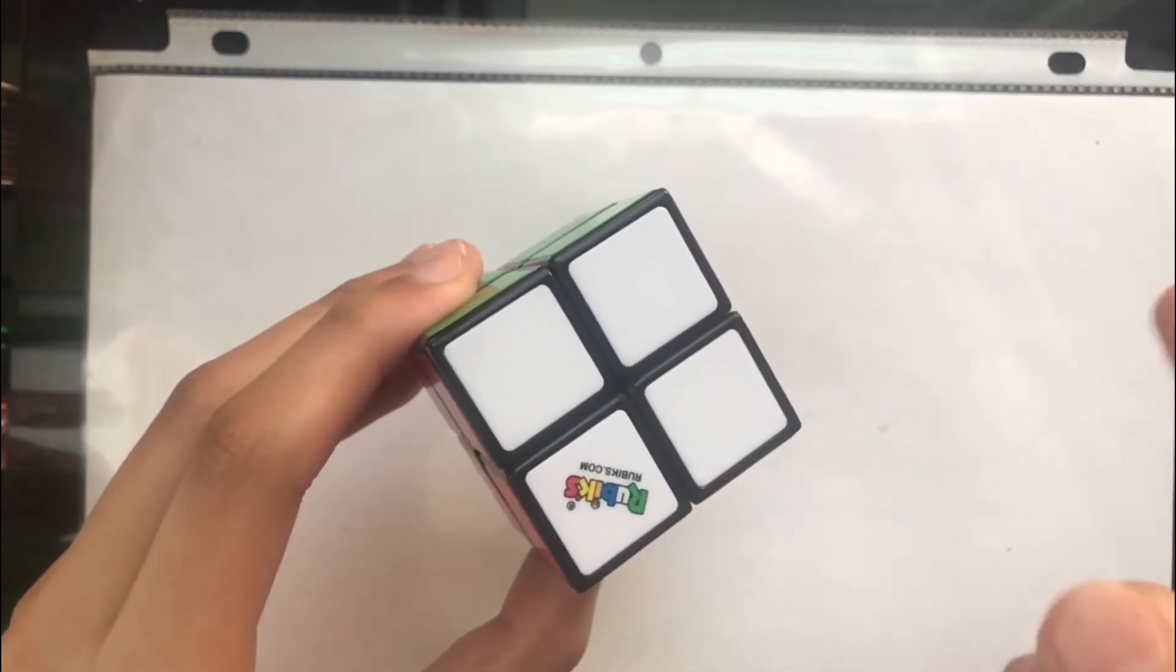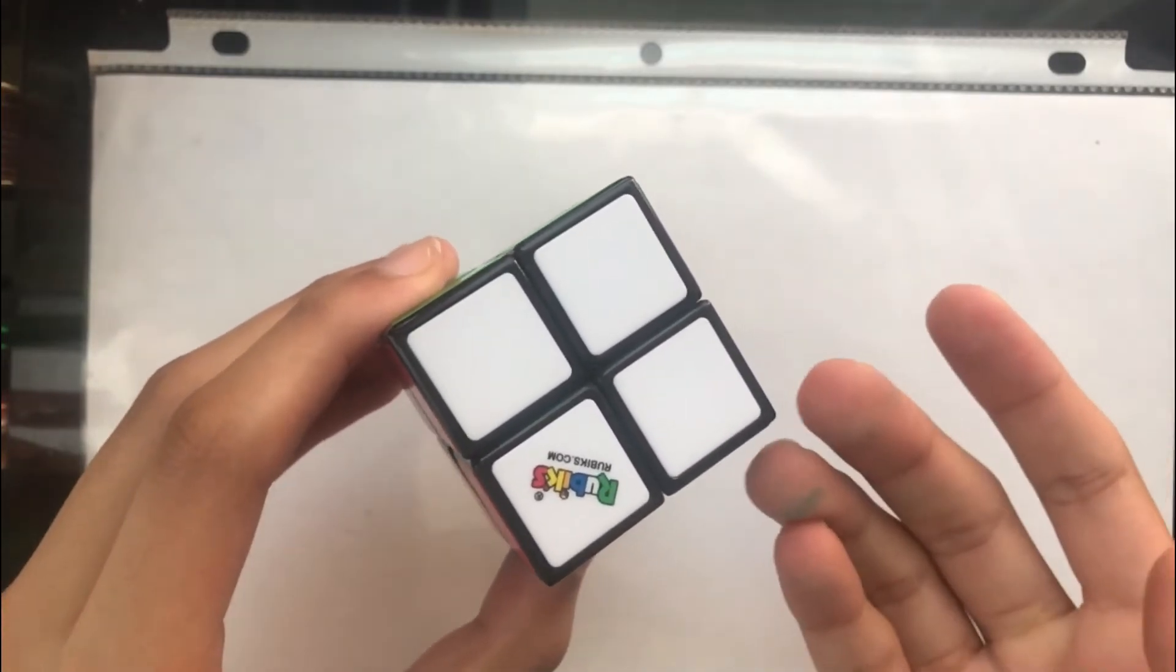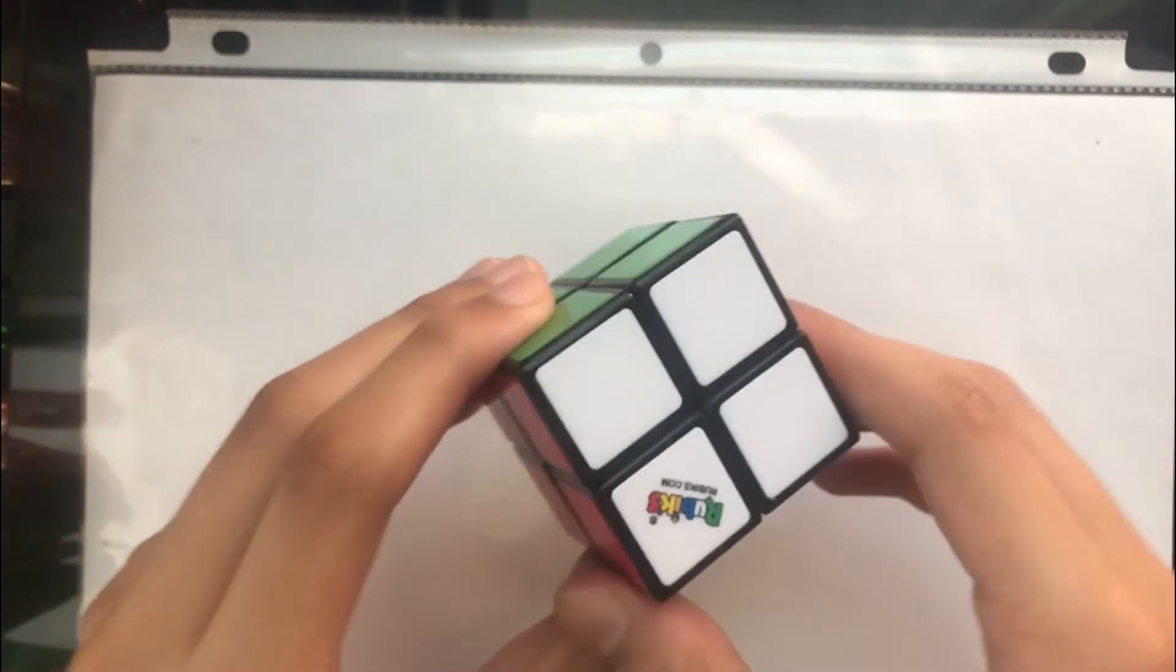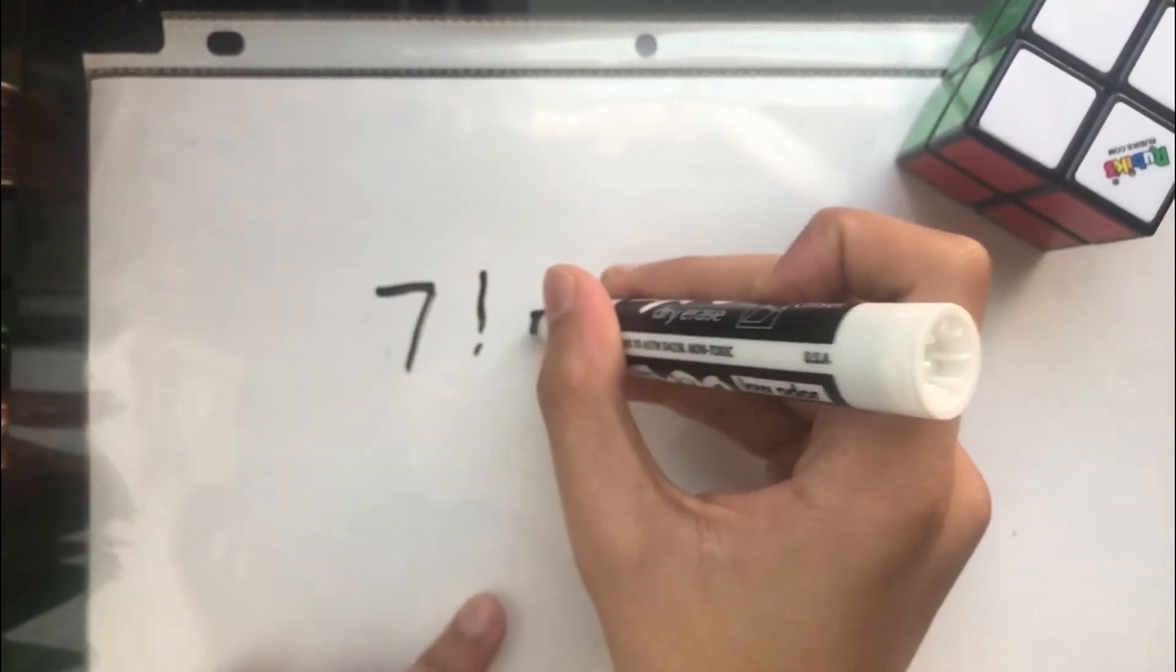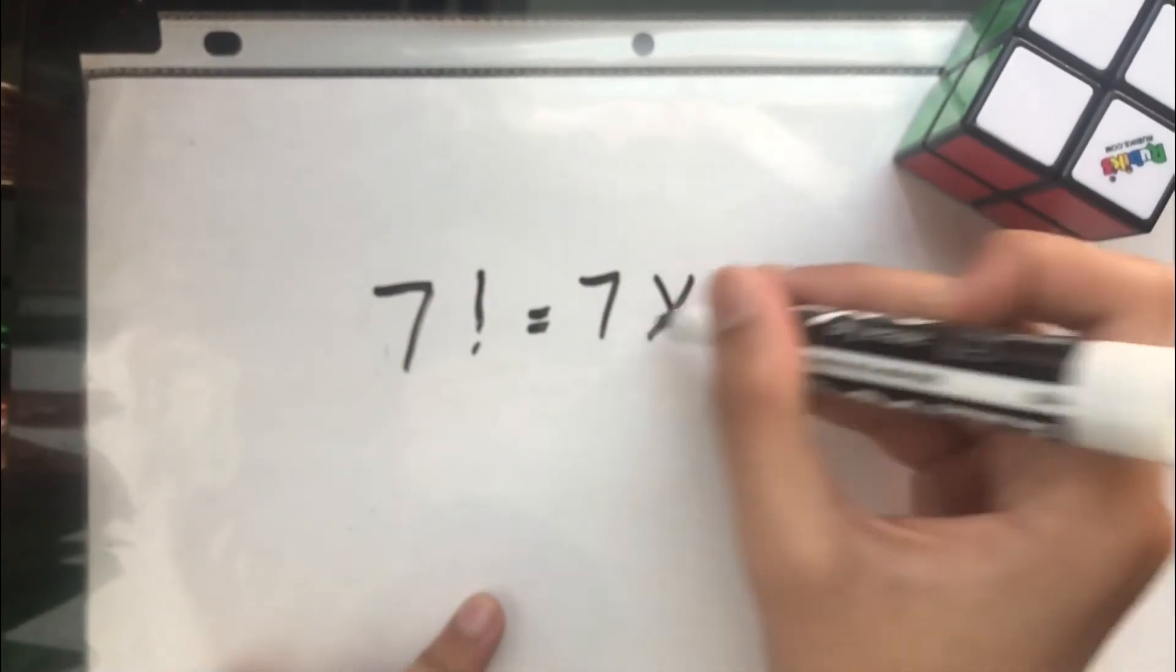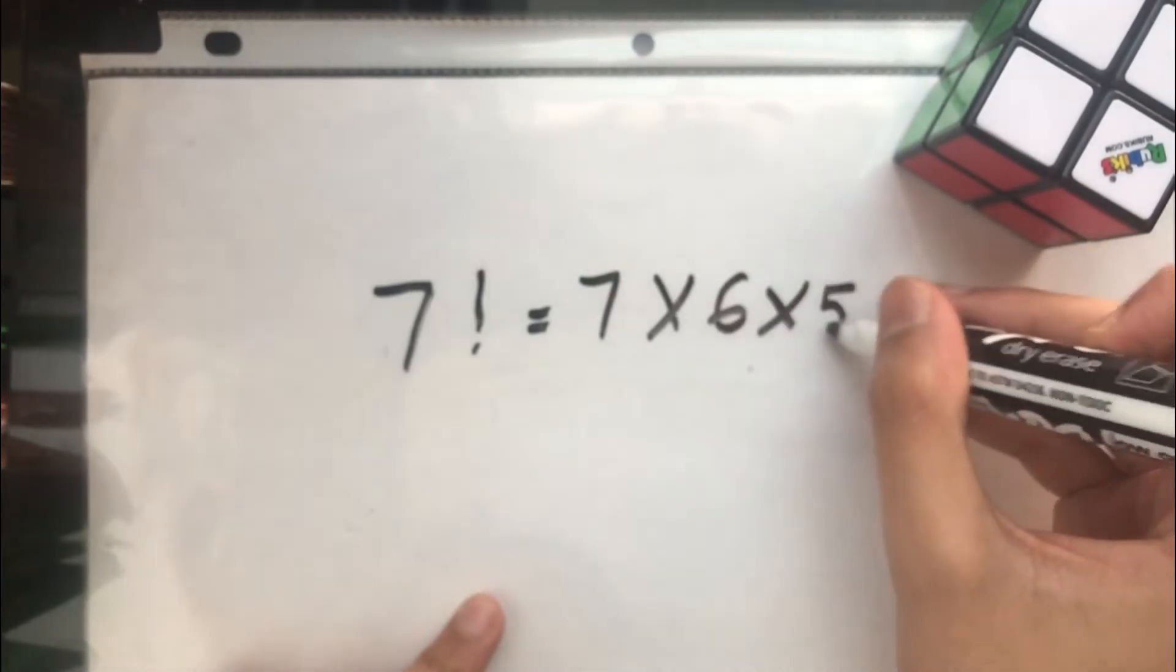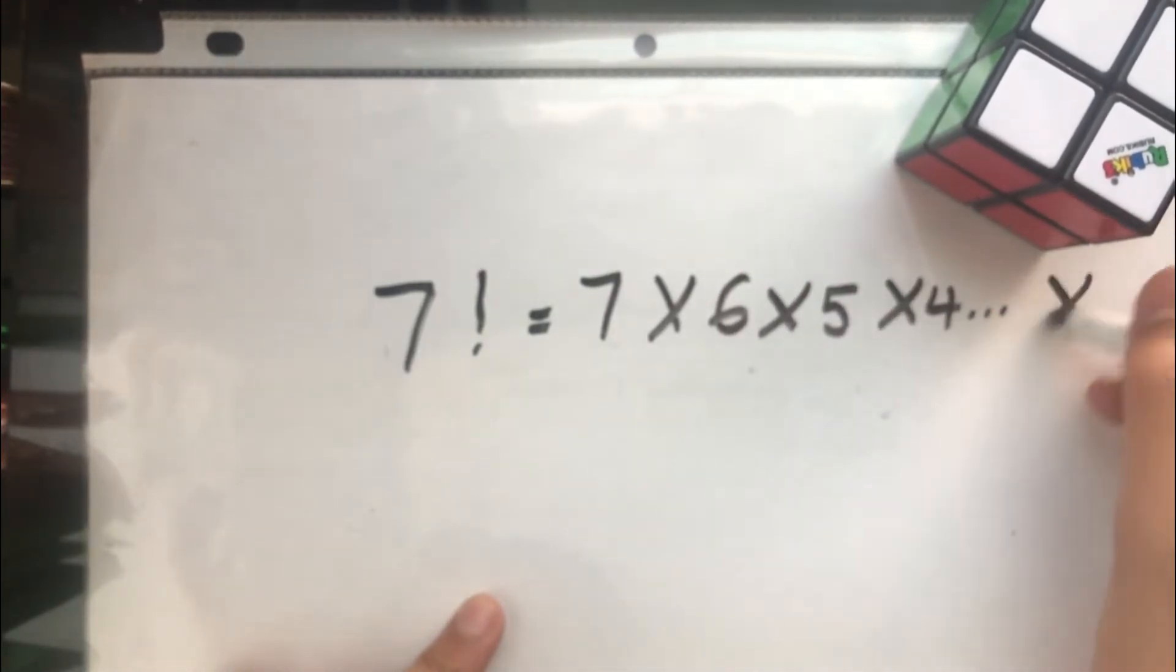Because the first can go in 7 positions, the second can go in 6 positions, the third can go in 5 positions and so on. So we can write this as 7 factorial which is equal to 7 times 6 times 5 times 4 all the way to times 1.